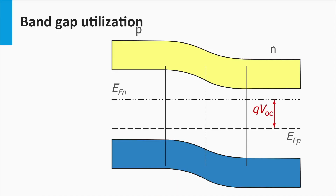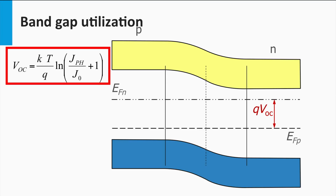First, we start with the design rule of bandgap utilization. Here you see a p-n junction — on the left the p-doped and on the right the n-doped. We also see the quasi-Fermi levels; the extent of splitting between the quasi-Fermi levels determines the open-circuit voltage. Earlier this week we deduced an expression for the open-circuit voltage, which is shown here.